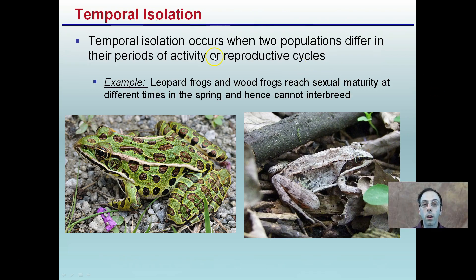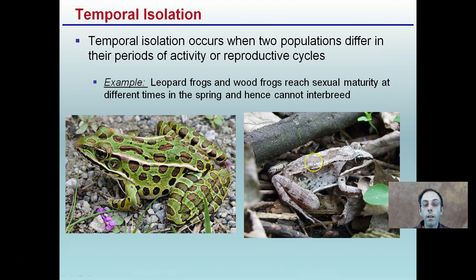Temporal isolation occurs when two populations differ in their periods of activity or reproductive cycles. An example is leopard frogs and wood frogs — they reach sexual maturity at different times in the spring, and hence do not interbreed. This is an example of temporal isolation.